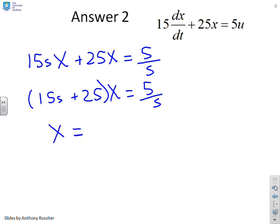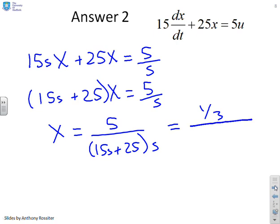Grouping common terms together, I get (15s + 25) into X(s) = 5/s. And rearranging, X = 5/(15s + 25) into s. And finally, making the denominator monic, I need to divide by 15. So I get a third in the numerator and then (s + 5/3) into s.